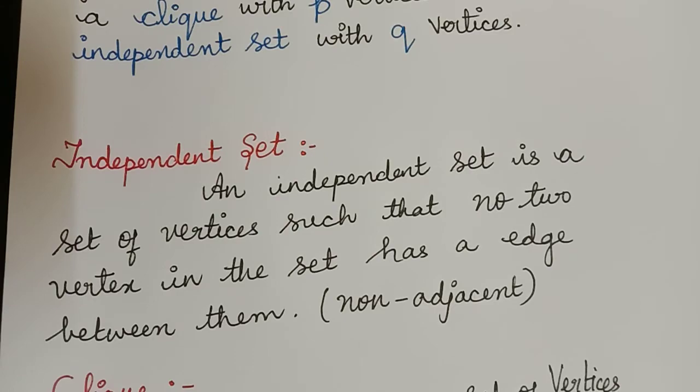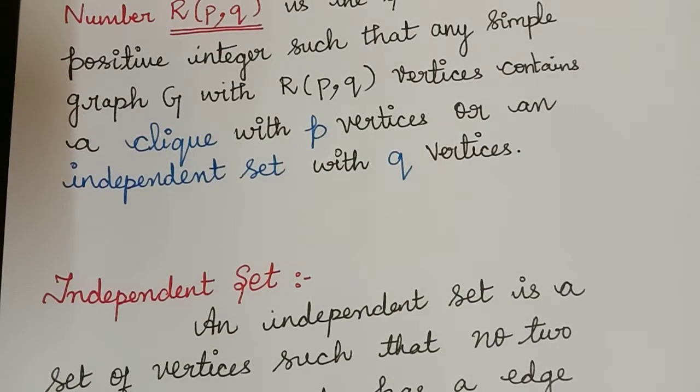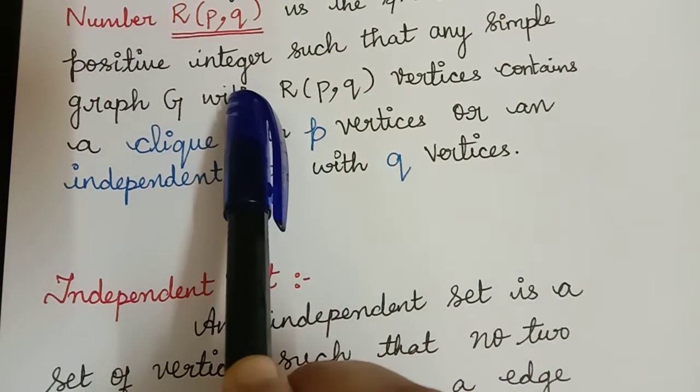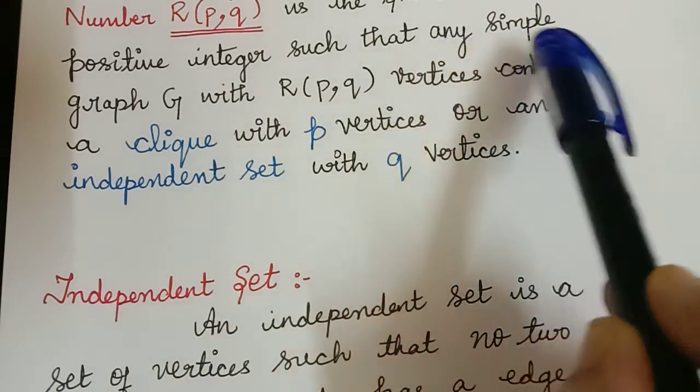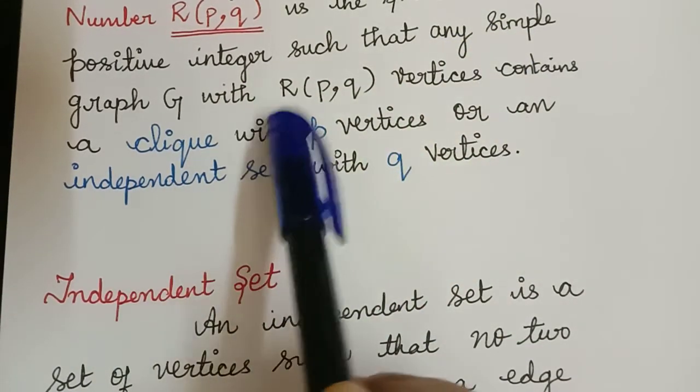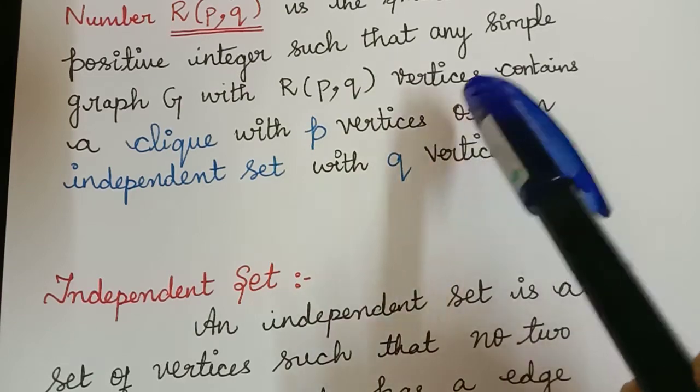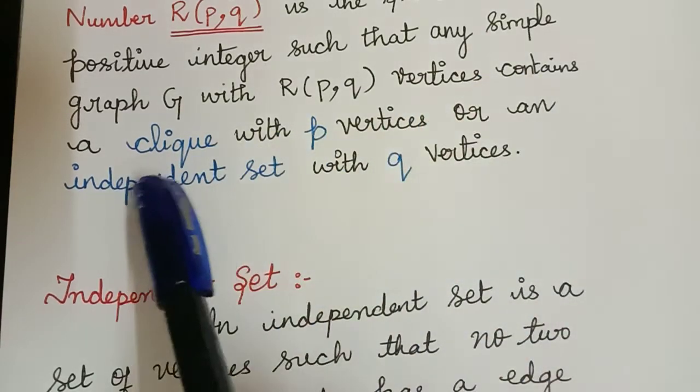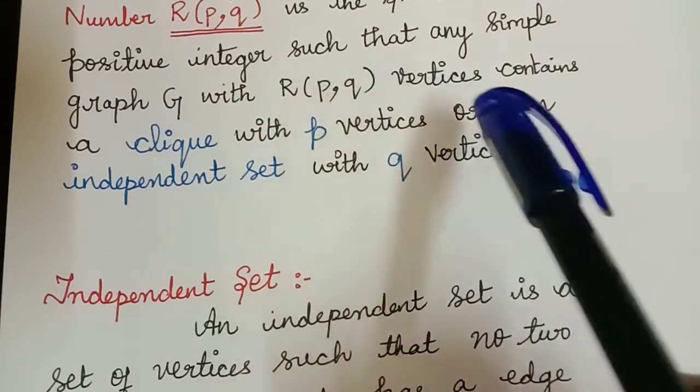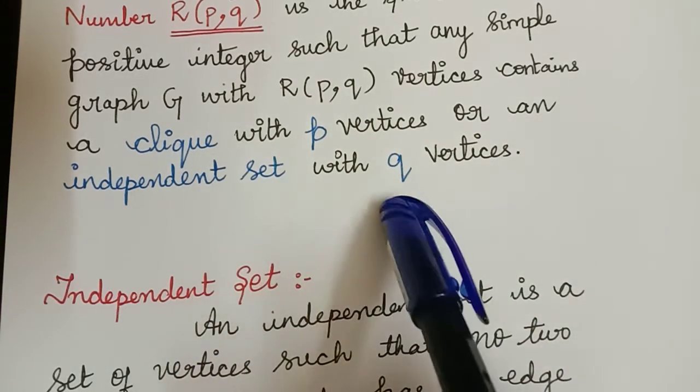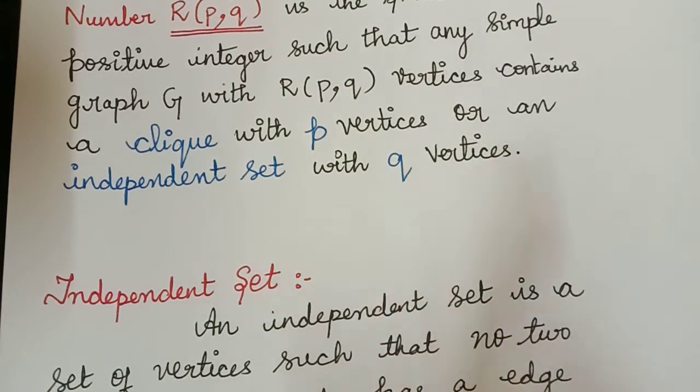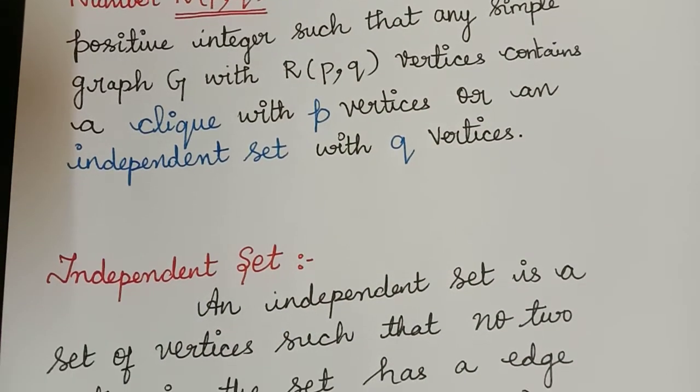Now, the Ramsey number is the smallest positive integer such that any simple graph G with R(P,Q) vertices contains a clique with P vertices and an independent set with Q vertices. This is the definition for Ramsey number.